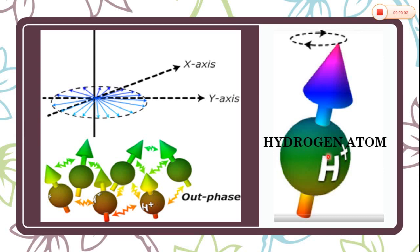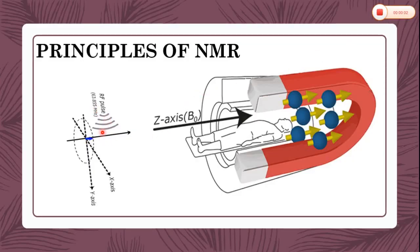Hydrogen is used to produce images in MRI because it is in abundance in the human body, and its magnetic properties are used. When there is no external magnetic field, the spins are out of phase and magnetic moments are randomly oriented. When radio frequency waves are sent to the patient's body — which lies on a bed surrounded by a strong magnetic field — a picture of the patient's insides is built up by a computer through detection of the emitted electromagnetic waves.